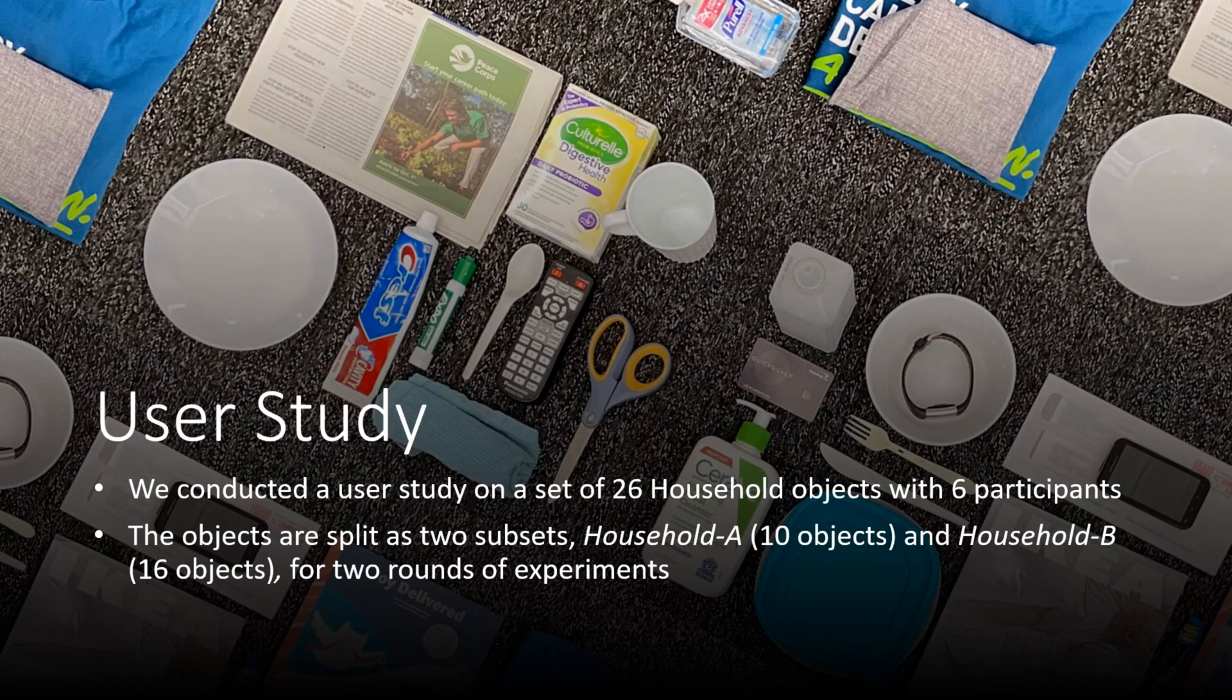Finally, we did a user study on a set of 26 household objects with six participants. These are split between two different subsets, household A and household B, for two rounds of experiments.